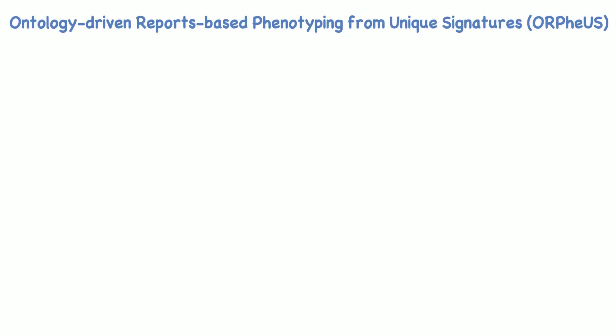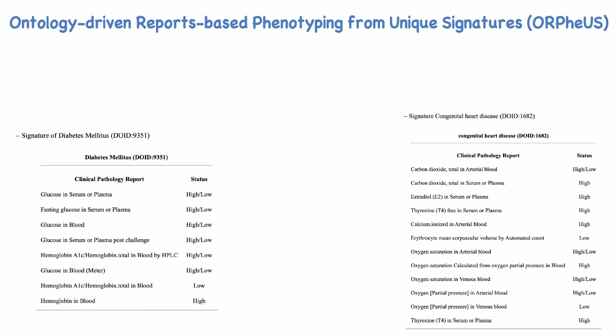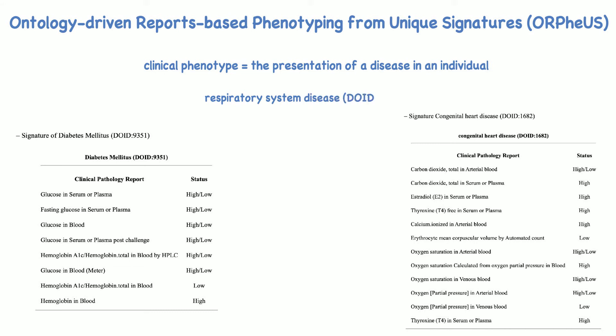The ontology-driven reports-based phenotyping from unique signatures was designed to phenotype electronic health records, wherein a clinical phenotype would be the presentation of a disease in a given individual. Electronic health records were mined using Human Disease Ontology terms, including respiratory system disease, diabetes mellitus, and congenital heart disease, which were used to annotate 351 abnormal laboratory tests and then used to generate signatures for 858 diseases.